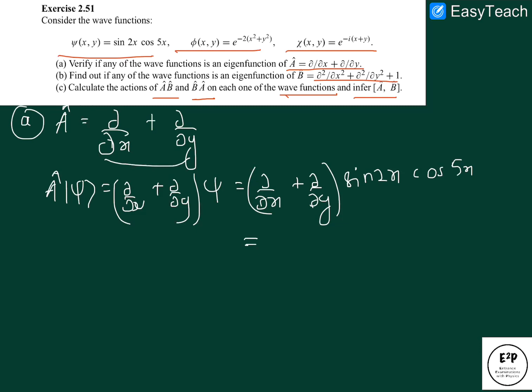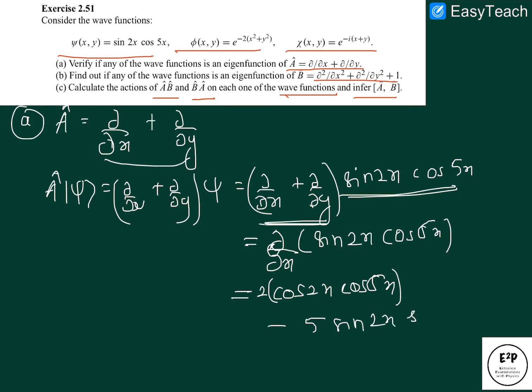If we separate these two trigonometric functions, there is no y term so d by dy will always be zero. Now d by dx of sine 2x cos 5x, applying the differentiation rule for products, we have 2 cos 2x cos 5x minus 5 sine 2x sine 5x.